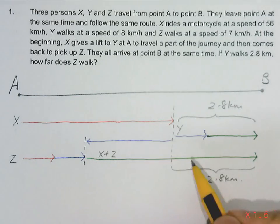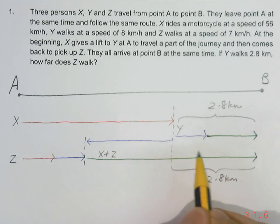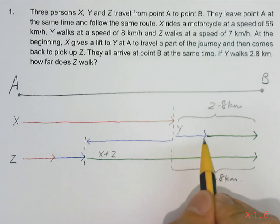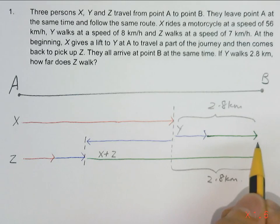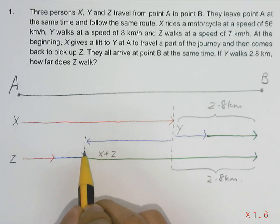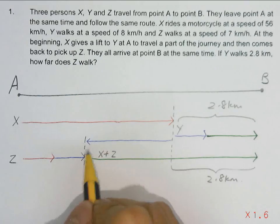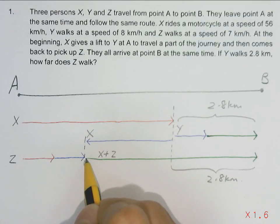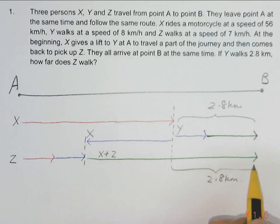Notice that the time taken for Y to walk this 2.8 km has this blue arrow and green arrow. Now during this blue arrow, X moves back to this meeting point to pick up Z. And this green arrow for the motion of X would be picking up Z and moving all the way to B.